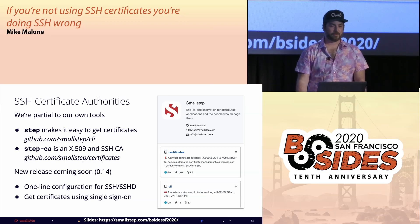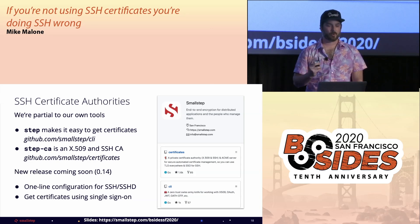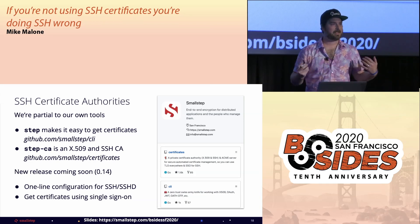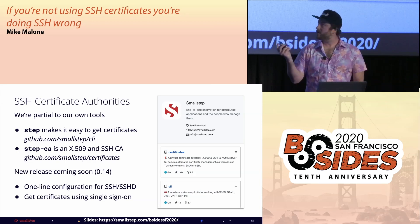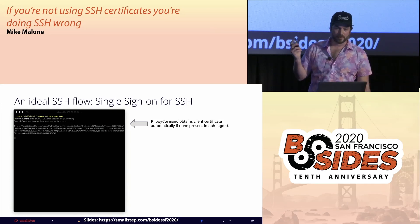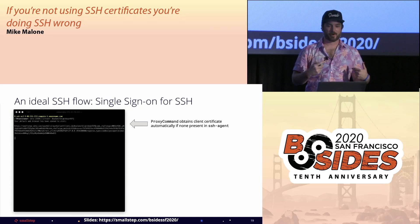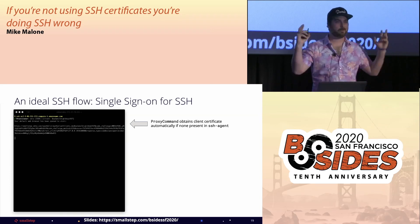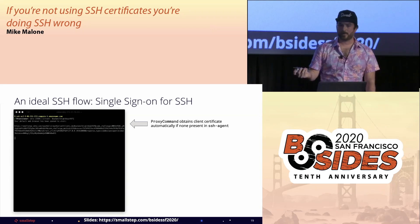We have a new release coming soon that will configure OpenSSH hosts and clients for you and automatically get a certificate from step CA when you SSH to a host — enabling what I think is an ideal SSH flow. Users just use SSH like normal, typing SSH and a hostname. We hook into the connection with a proxy command to check if the user already has a certificate in SSH agent. If they've already logged in and have a certificate, they're connected normally.